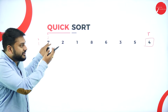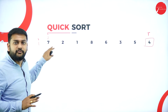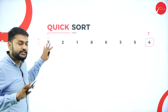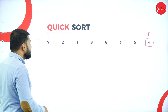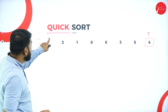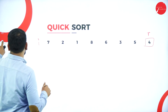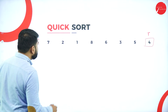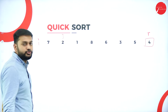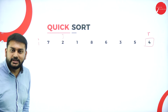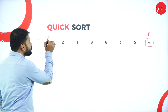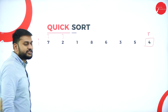Seven is obviously greater than four, so I will not do anything — I will retain it as it is. Then J will move to the next element. The next element is two. J is coming to two, and I is pointing to where seven was.